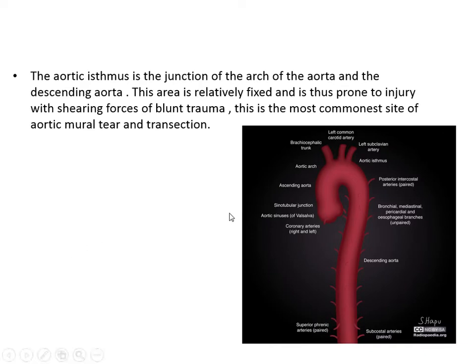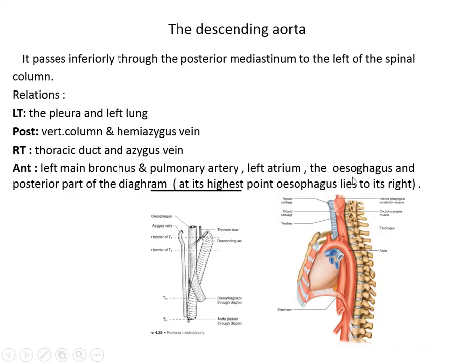The aortic isthmus is an important area because it is a relatively fixed area and prone to injury. This is the junction between the arch of the aorta and the descending aorta. Aortic mural tear and transection occur here after blunt injury. The descending aorta passes inferiorly through the posterior mediastinum to the left of the spinal column. Its relations are the left pleura and left lung, and posteriorly the vertebral column and hemiazygos vein.